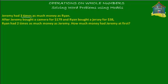Jeremy had three times as much money as Ryan. After Jeremy bought a camera for $179 and Ryan bought a jersey for $38, Ryan had two times as much money as Jeremy. How much money had Jeremy at first? So what's the problem telling you? It's telling you that at first Jeremy had three times as much money as Ryan. Then both guys made some purchases and later Ryan was richer than Jeremy.